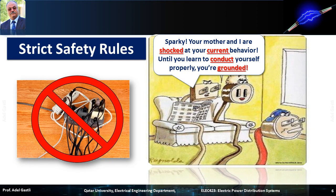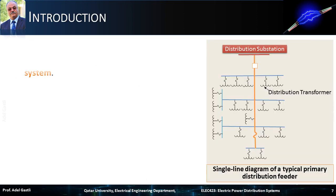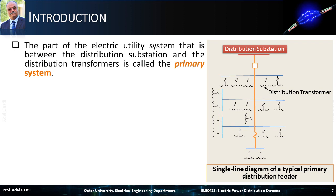Electric safety rules must be strictly respected, and the standards play a significant role in guiding the designers to develop quite safe designs. The part of the electric utility system that is between the distribution substation and the distribution transformers is called the primary system.